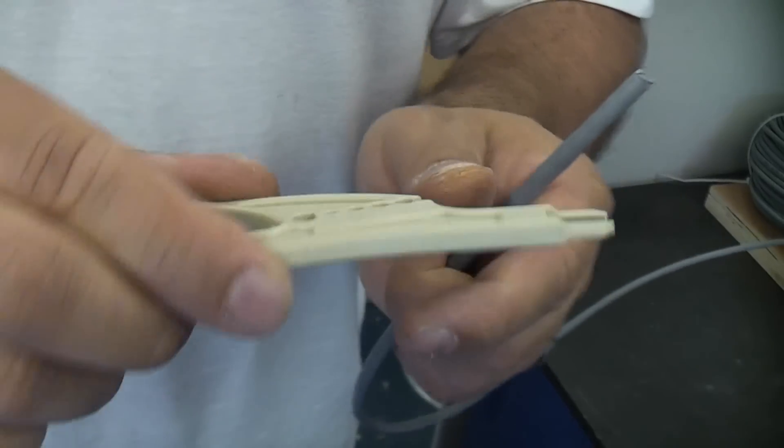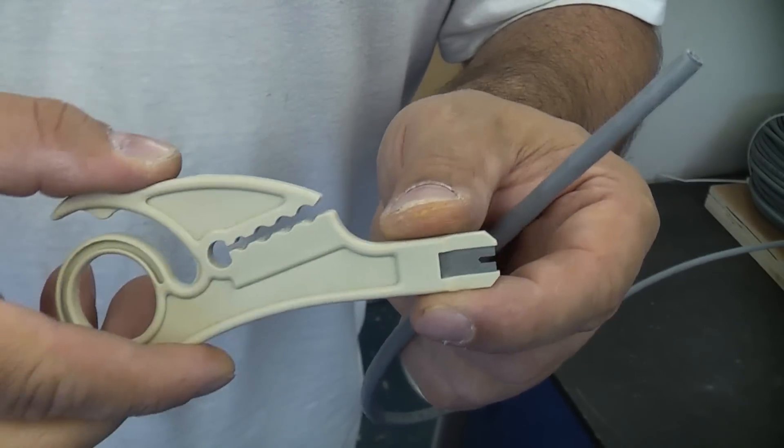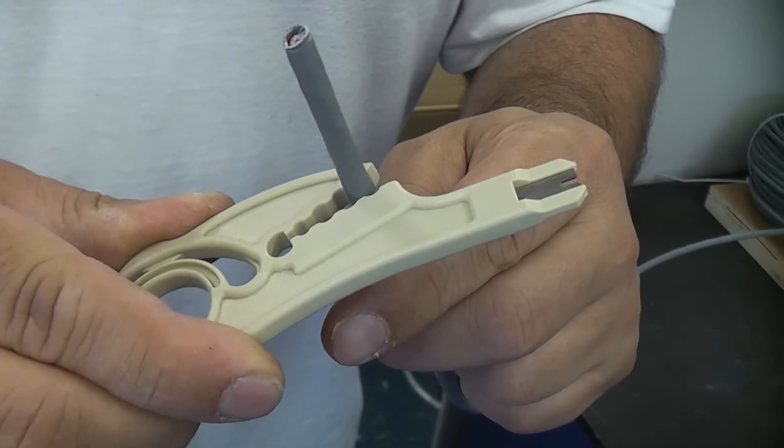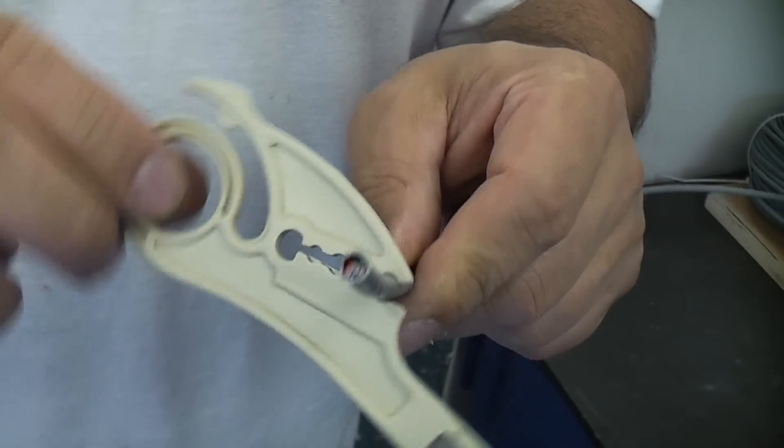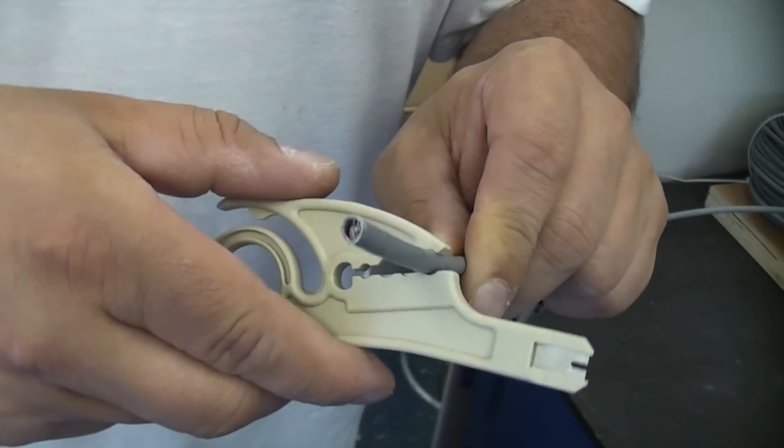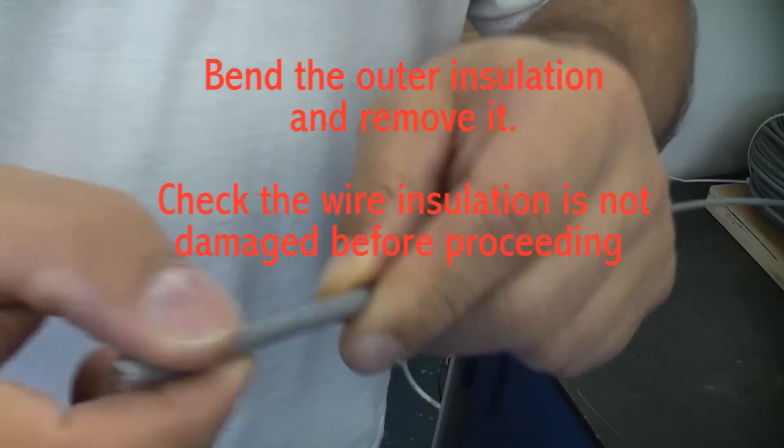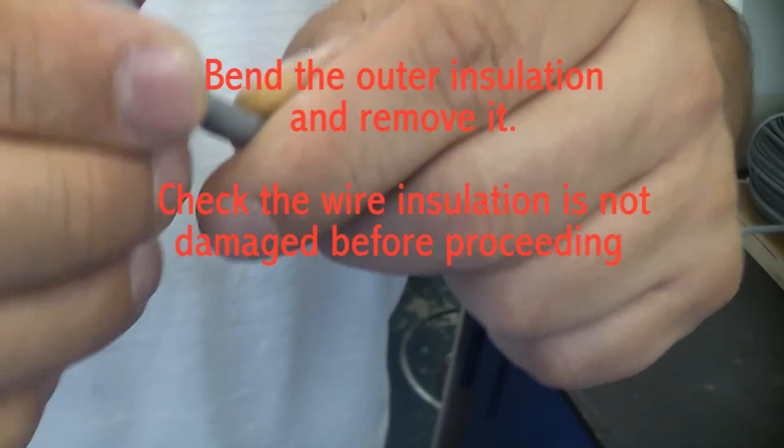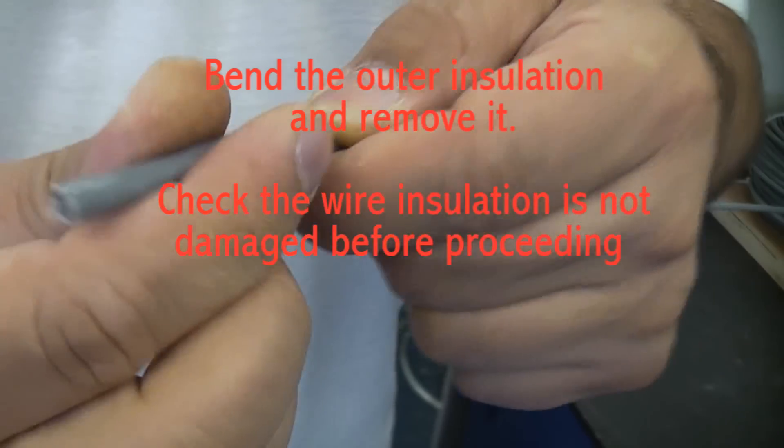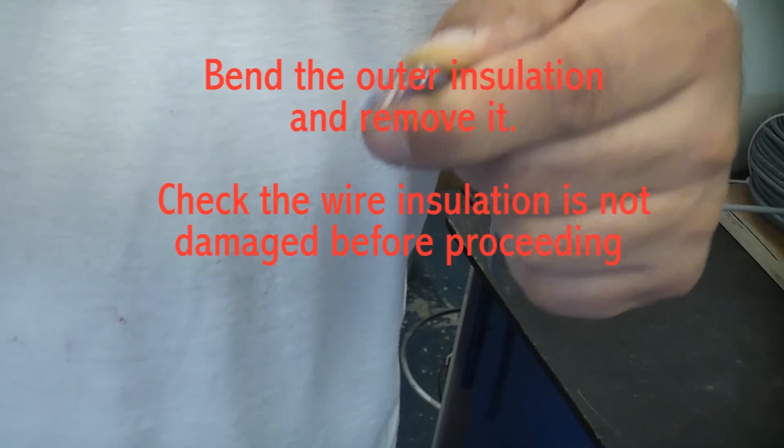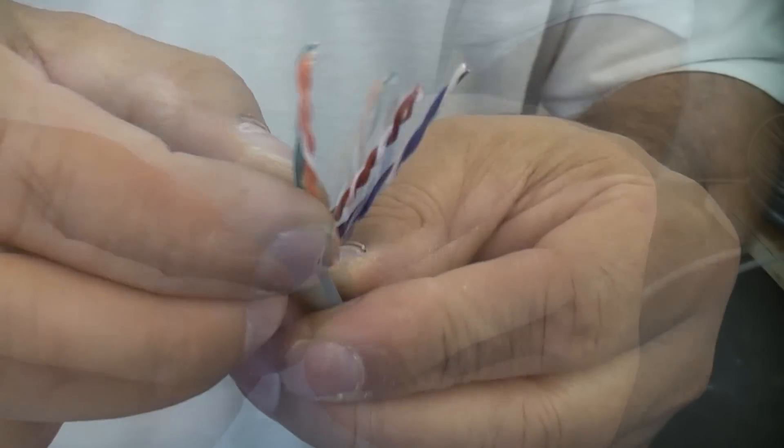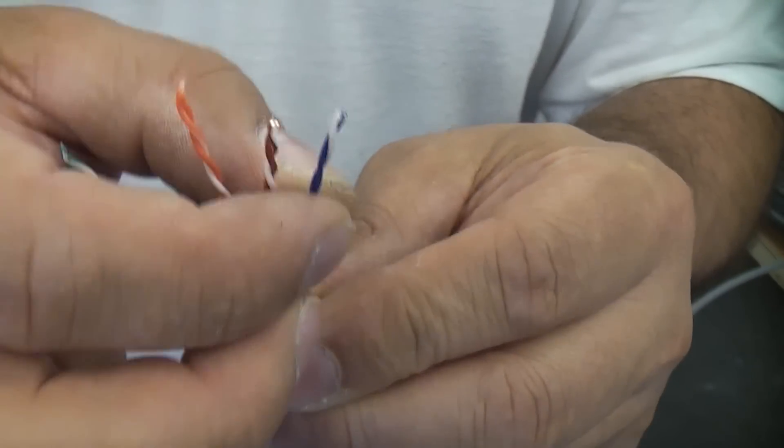To do that you can get a special tool like this which is designed for this type of cable. Simply put that on there, do one revolution. That will then give you your four pairs of wires.